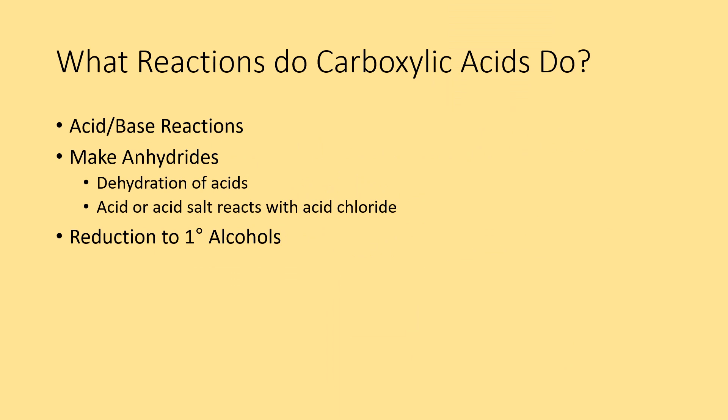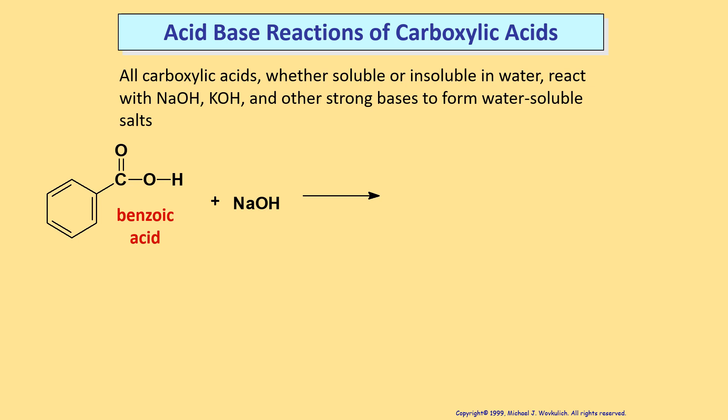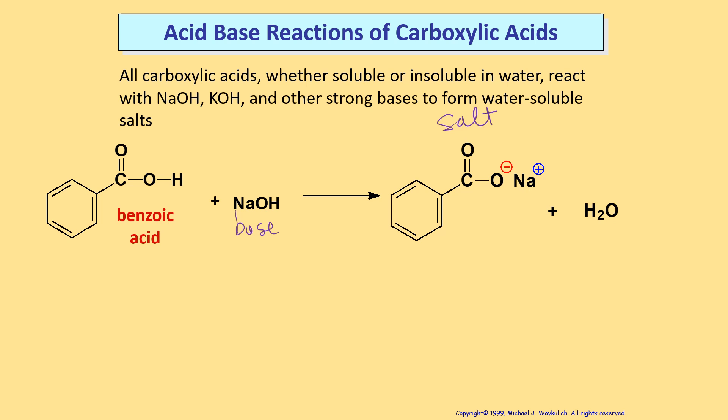So carboxylic acids — here are the three main things that carboxylic acids do. And then making anhydrides, there are two versions. So acid-base reaction: you heard about this in the last video when we talked about properties, but carboxylic acids are acids, so they react with bases. This base is sodium hydroxide, and they make salts — a salt and water. So that's the main reaction: carboxylic acid reacts with the base to make a salt and water.